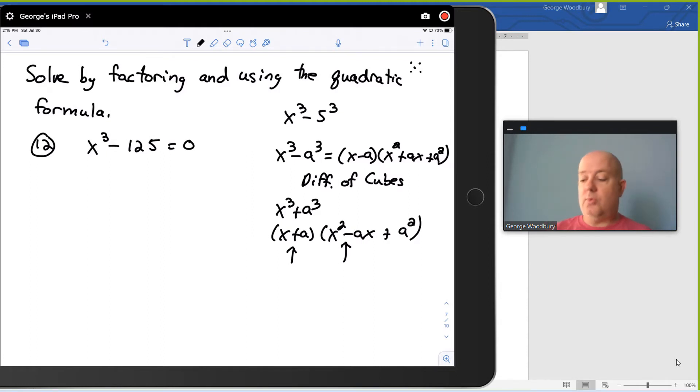To factor this one using the formula, that's going to be x minus 5 times x squared plus 5x plus 25 equals zero.